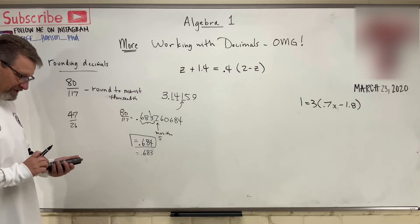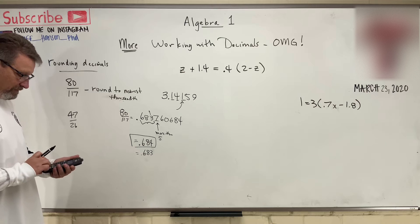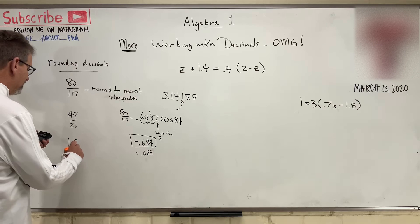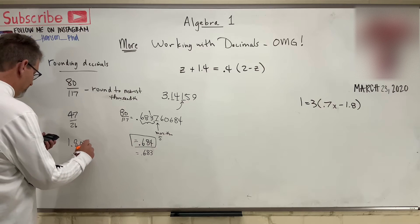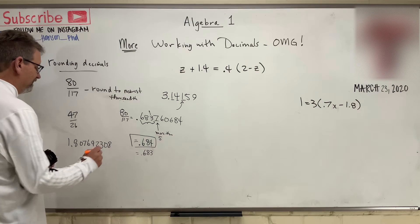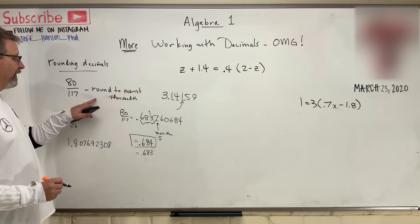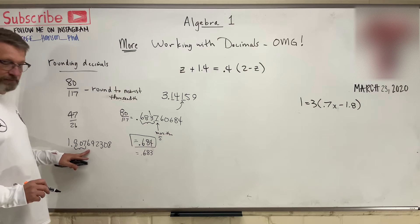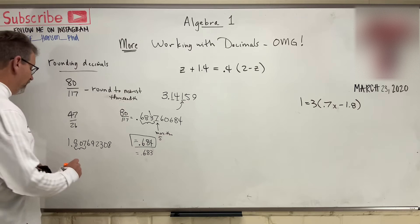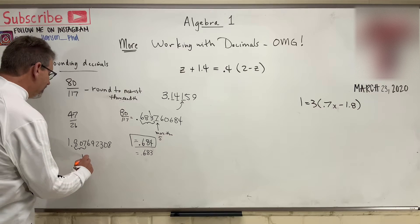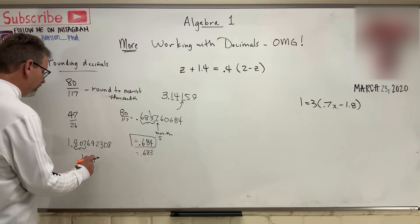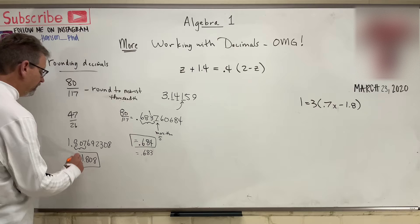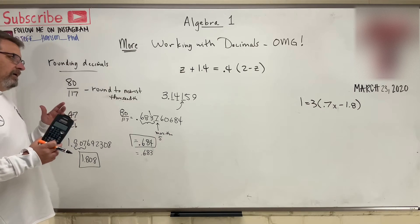What about this one? 47 over 26, 47 divided by 26 is 1.807, 6, 9, 2, 3, 0, 8. That's a lot of decimals. But round to the nearest thousandths. So that's there. Do we round up or down? We round up again, 1.807, no, sorry, 1.808. And there it is, rounded up to the next nearest number.